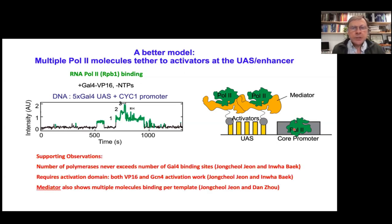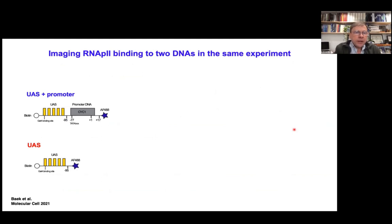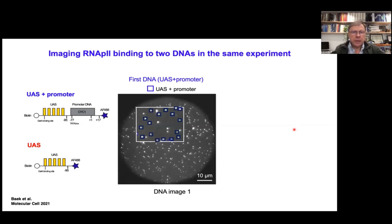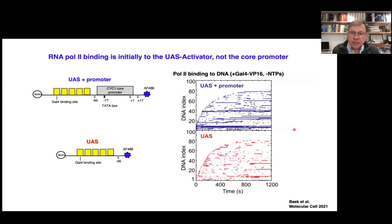We never see more polymerases than there are Gal4 binding sites, which argues against a condensate model. We get essentially identical results when we image Mediator. The key experiment — originally intended as a control — was a two-template experiment: one with the full UAS plus core promoter, and a second negative control with only the UAS. Amazingly, there was essentially no difference in the initial binding rate — the UAS recruits polymerases just as well as the UAS plus promoter.